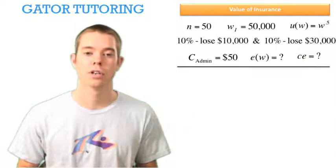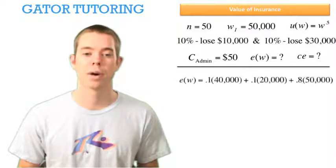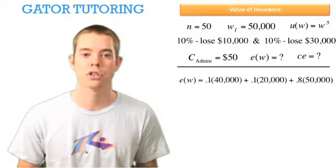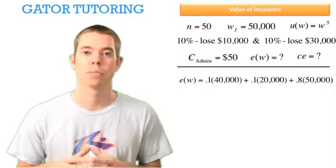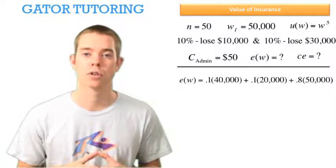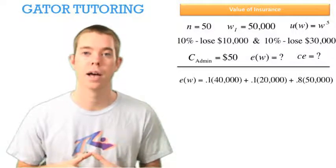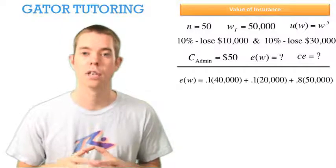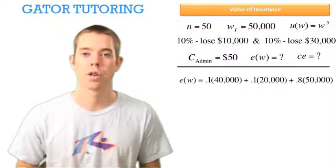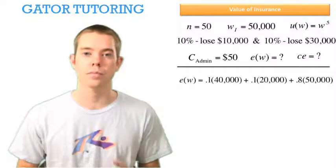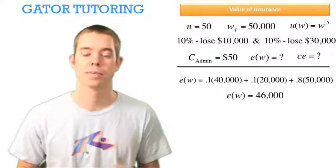Now let's start out by finding the expected wealth. There's a 10% chance we're going to lose $10,000, so we'll end up at $40,000. There's a 10% chance we're going to lose $30,000, so we'll end up at $20,000. And there's an 80% chance we don't lose any money at all, so we end up at $50,000. Summing these values, we find that our expected wealth is $46,000.